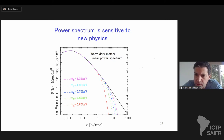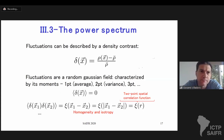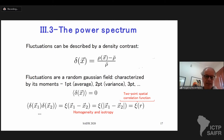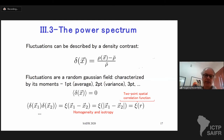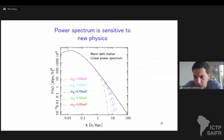Jenny asks: are the perturbations generated for the formation of galaxies scalar or tensor? For the formation of galaxies you're interested in the scalar perturbations. Tensor perturbations give rise to primordial gravitational waves that have not been detected yet.